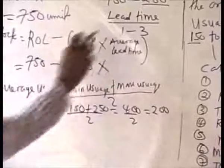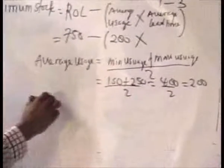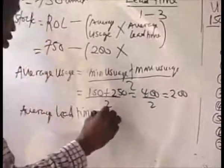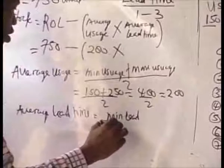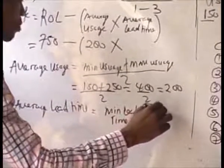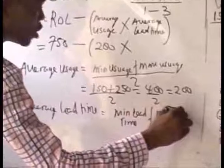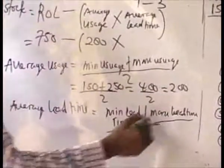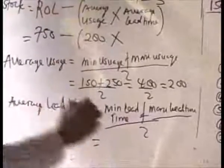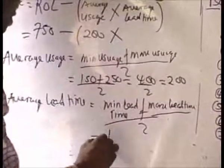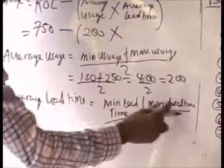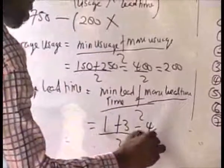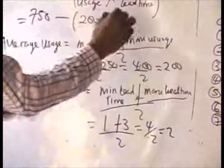Then times average lead time. The formula for average lead time is: minimum lead time plus maximum lead time, divided by 2. Our minimum lead time is 1, maximum lead time is 3. So 1 plus 3 equals 4, divided by 2 gives us 2. So our average lead time is 2.